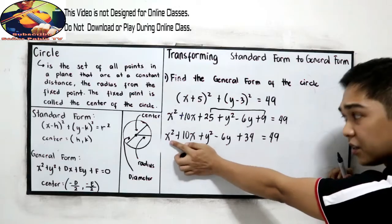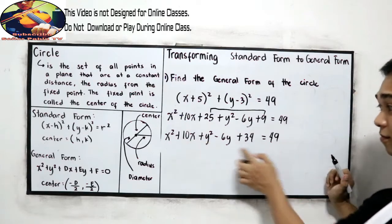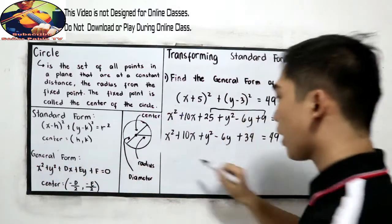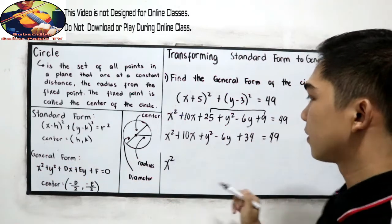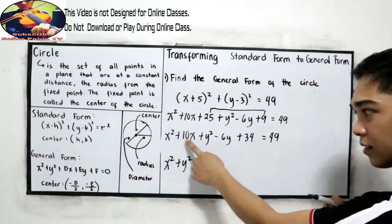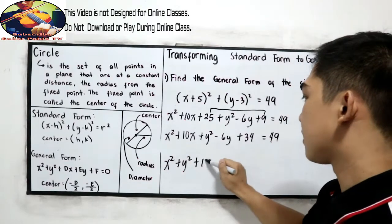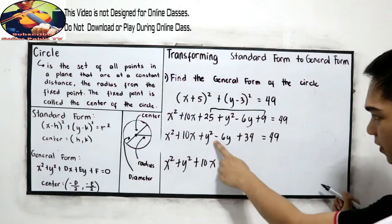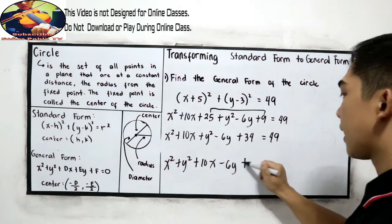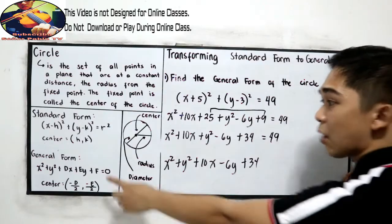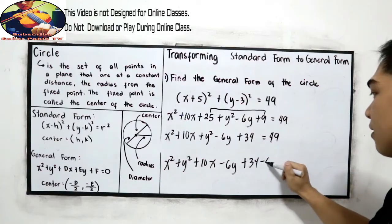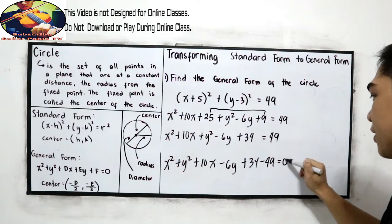And now let us rearrange our equation. So x squared, copy positive y squared. For our terms: plus 10x, minus 6y, plus 34. In our general form that is equated to 0, so we need to subtract 49, is equal to 0.